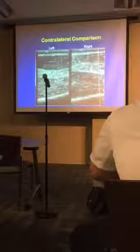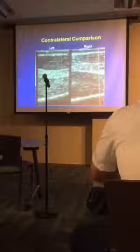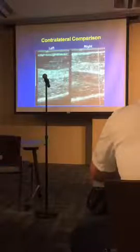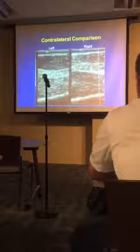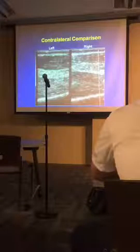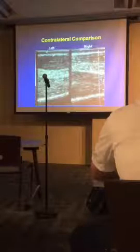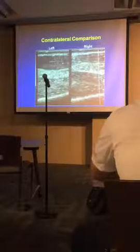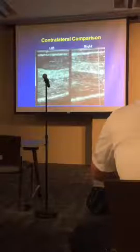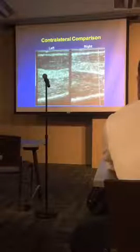Here's a simple example of contralateral comparison: the painful Achilles tendon on one side compared to the other. You can see the tendon is thicker, more hypoechoic, and has more through-transmission on the affected side. This is classic Achilles tendinosis compared to the normal contralateral side. We use bilateral comparison less as experience grows, but it remains a daily tool.